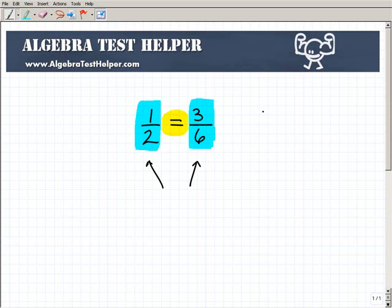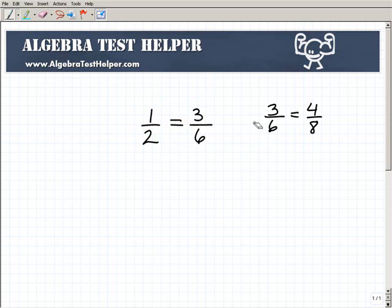Let's say 3/6 is equal to 4 over 8. Is that a proportion? Absolutely, because 3/6 is the same thing as 1 half and 4 eighths is also the same thing as 1 half. So 1 half is equal to 1 half. You have two equal fractions. So a proportion is an equation of two equal fractions.